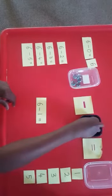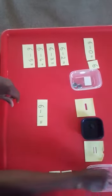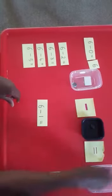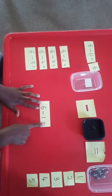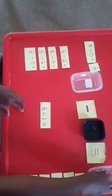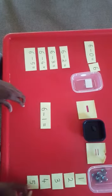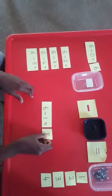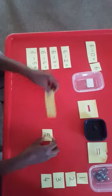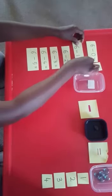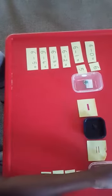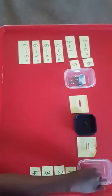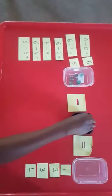So with my six stones, I take one away and put it in this container. How many are remaining? One, two, three, four, five — six take away one equals five. So there are five stones here. I find the answer card five and put it next to the equation.